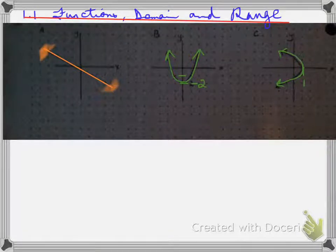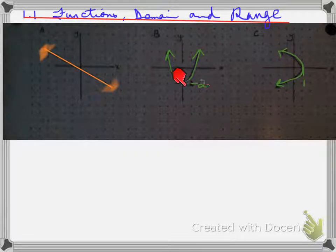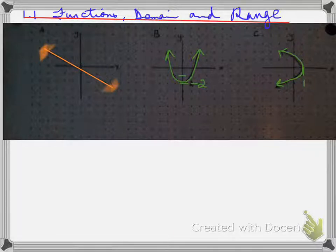Functions, domain, and range — day two. What we're looking at here are three relations where we have to determine whether they're functions or not, and then we will state their domain and their range. In order to do this, we have to look at each one separately. First of all, let's identify whether each of these are functions or not.